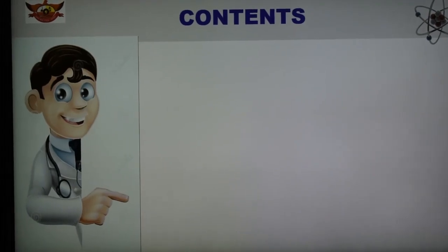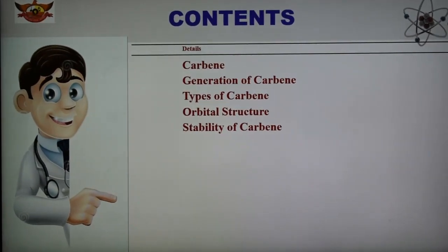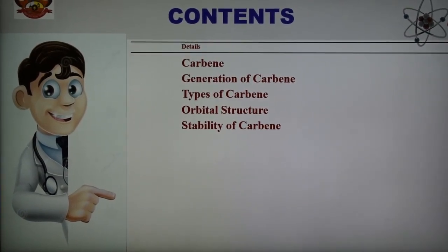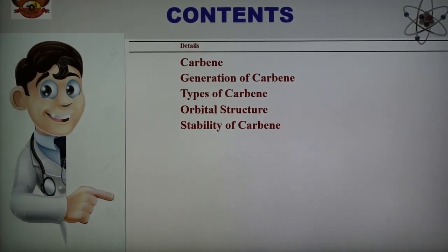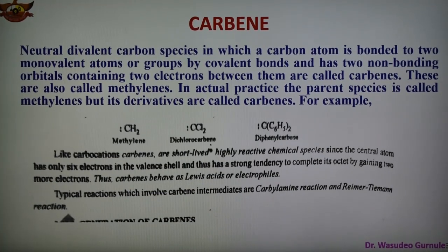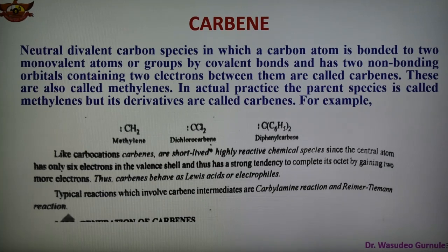The topics covered are: carbene, generation of carbene, types of carbene, orbital structures, and the stability of different types of carbene. Carbene is a species in which carbon has 2 electrons and 2 covalent bonds — for example, C double bond with 2 electrons. Carbene can be defined as divalent carbon in which the carbon atom is bonded to 2 monovalent atoms or groups by covalent bonds, and has 2 non-bonding orbitals containing 2 electrons between them.